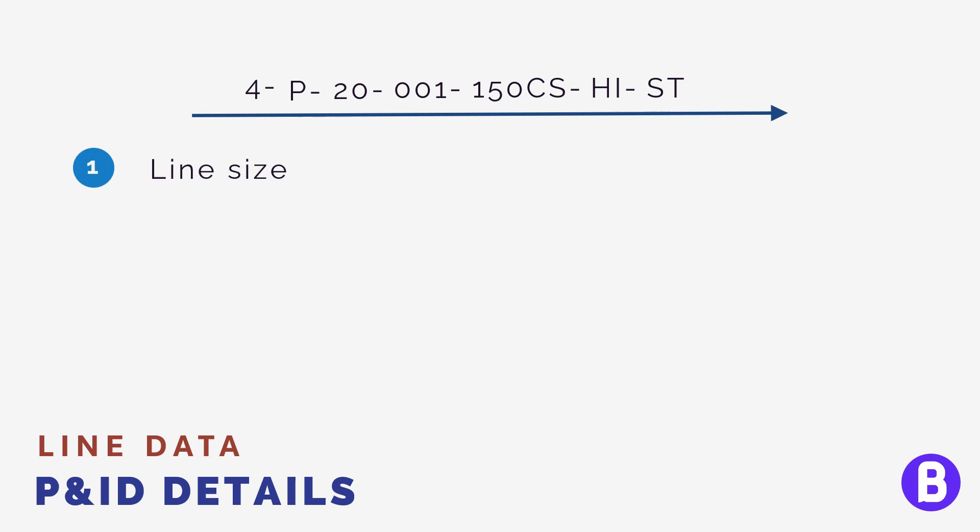The line size. The line size is typically the nominal pipe diameter in inches. It's supposed to be sized based on the fluid flow rate, the density, the viscosity, and we can know all these data from the material balance. Then we can choose the suitable size based on maximum velocity and pressure drop criteria that we have.